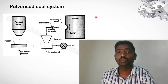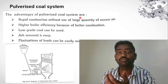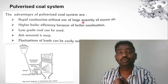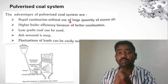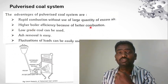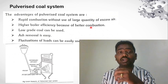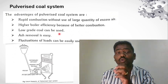Here are the advantages of the pulverized coal system. First, rapid combustion without use of a large quantity of excess air. Second, higher boiler efficiency because of better combustion. Third, low grade coal can be used.